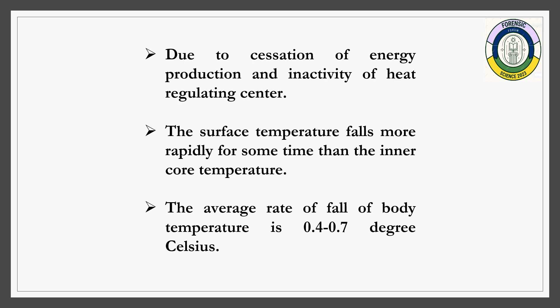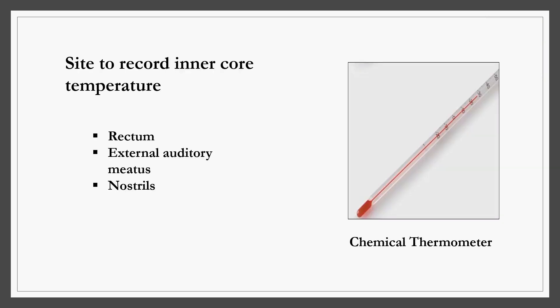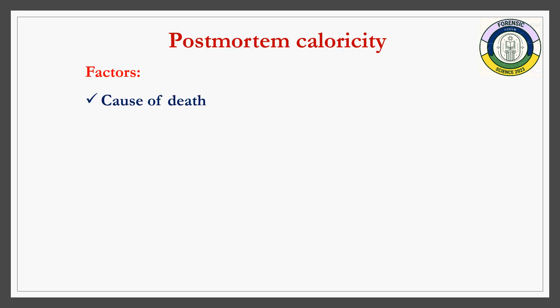After death, the production of energy stops, causing the body temperature to fall. The surface temperature falls more rapidly compared to the inner core. The average rate of fall is 0.4 to 0.7 degrees Celsius per hour. Common sites to record inner core temperature using a chemical thermometer are the rectum, external auditory meatus, and nostrils — the rectum being the best site.